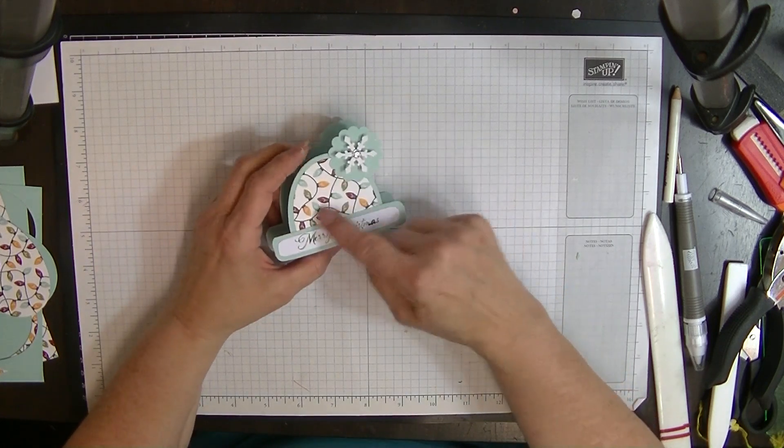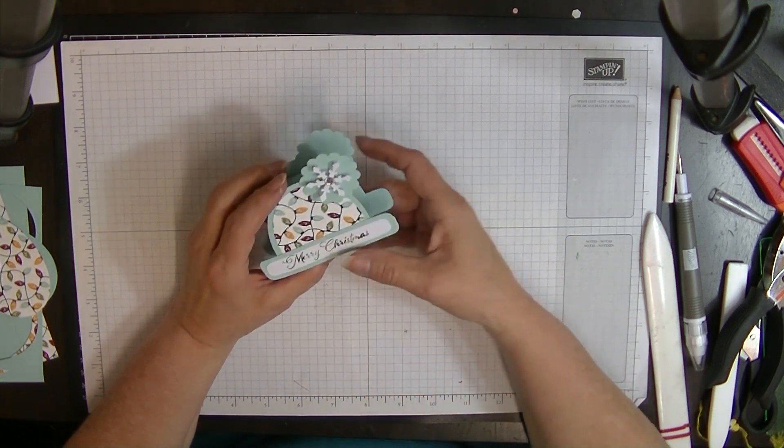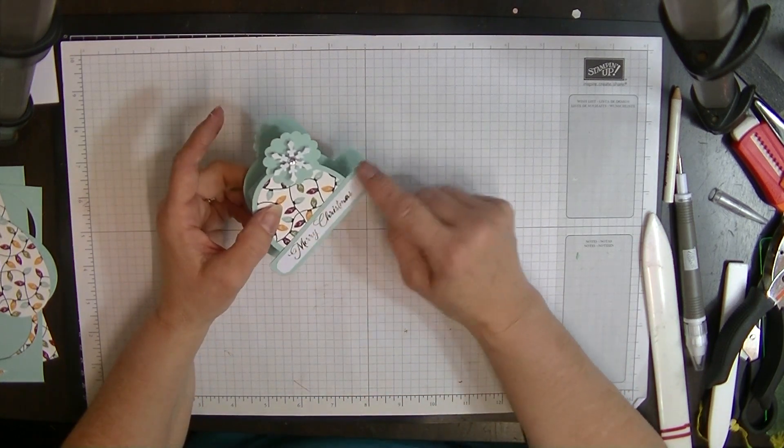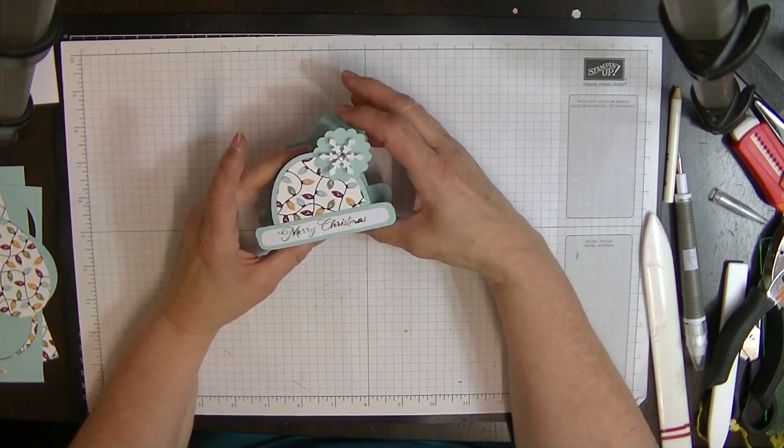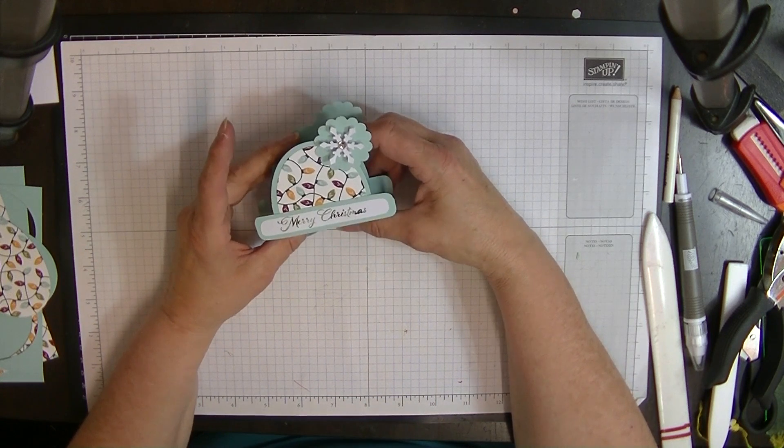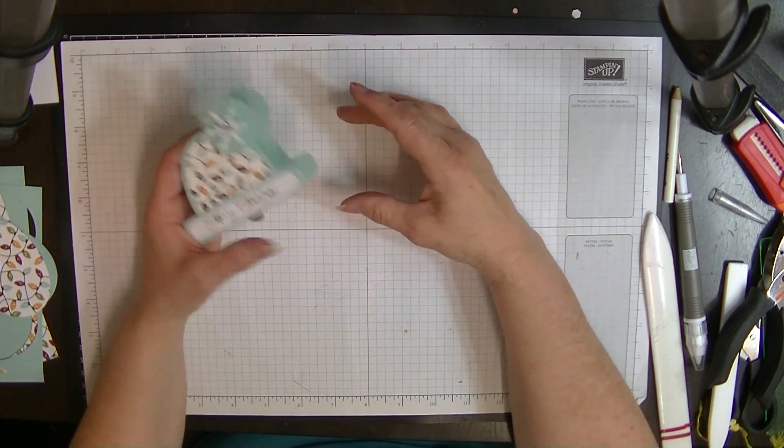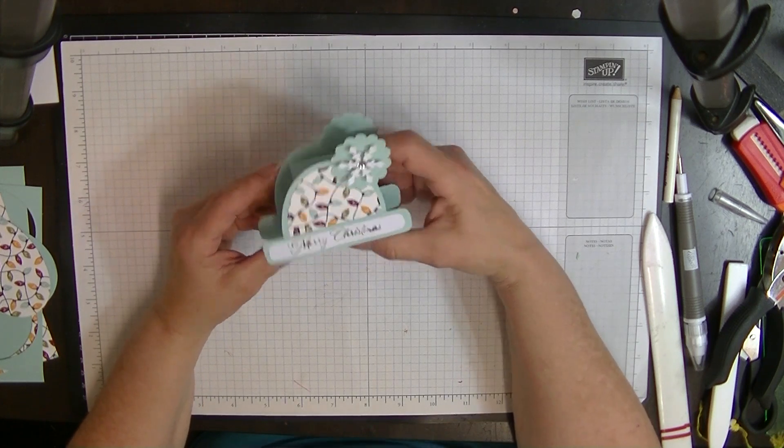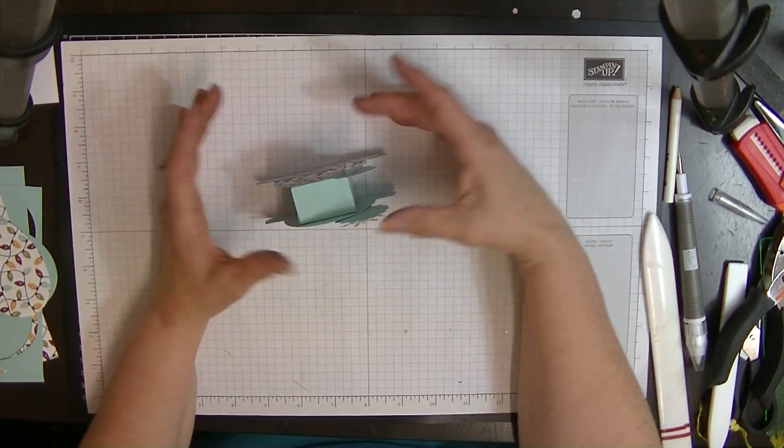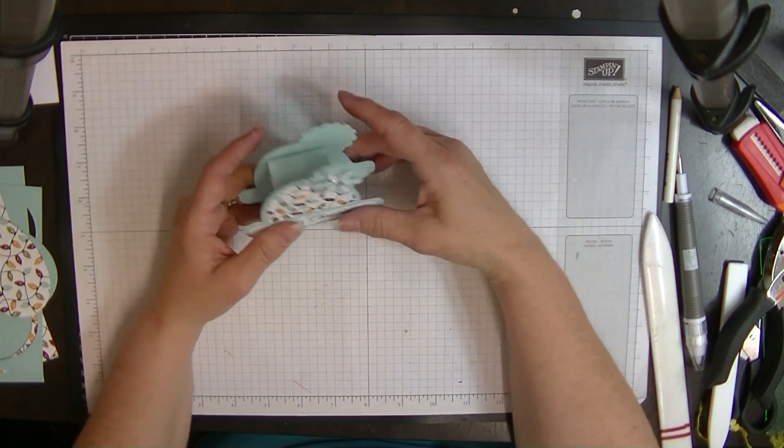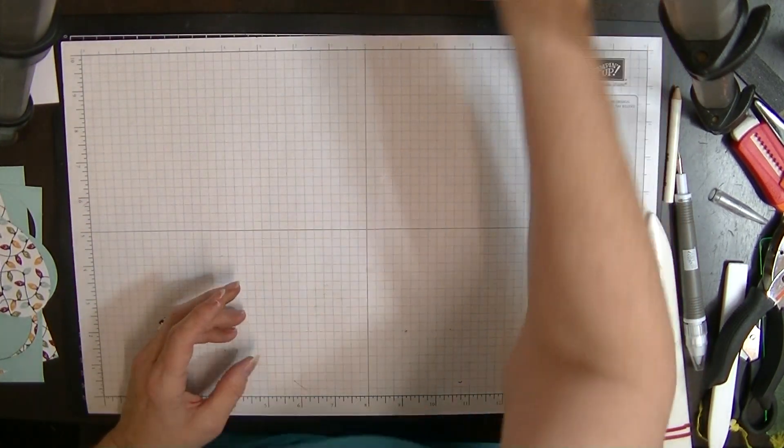I'm going to make another one in the same coloring except that I'm going to use pool party for my words down the bottom here. But once again, you could put a person's name there if you wanted to use them as table settings so that people know where they're going to sit for the duration of their meal.